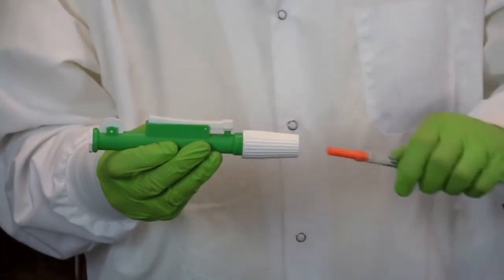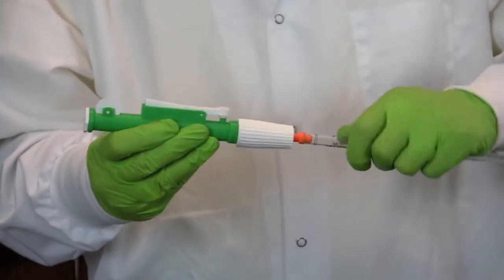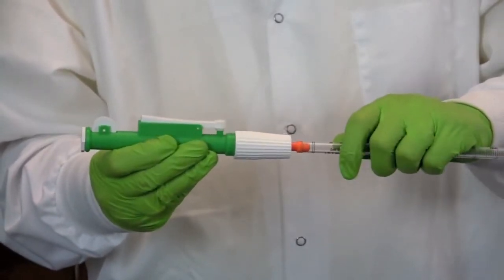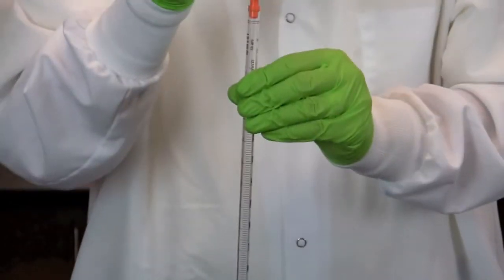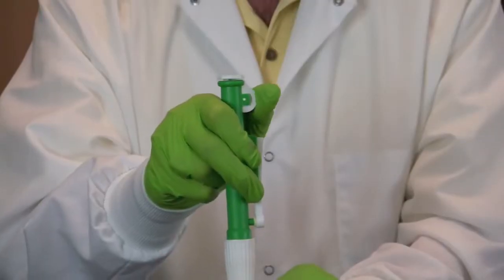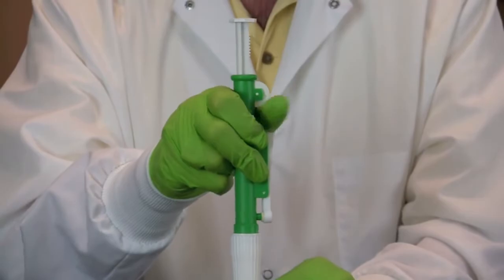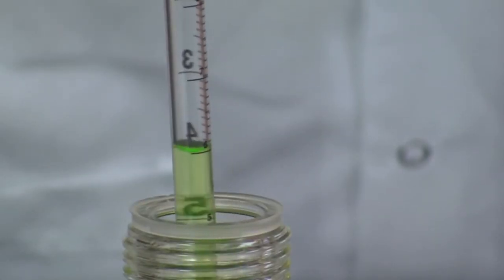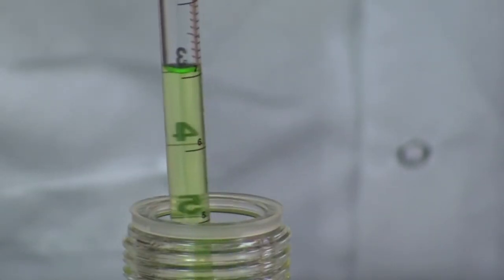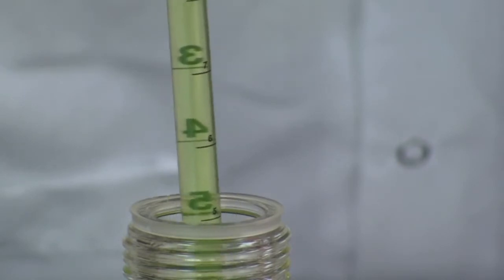Insert the pipette into the gasket by pressing and twisting firmly. Then insert the pipette into the solution to be transferred. Using your thumb, roll the dial downward to suck up solution. The dial can be moved up and down to get the exact amount of solution needed.